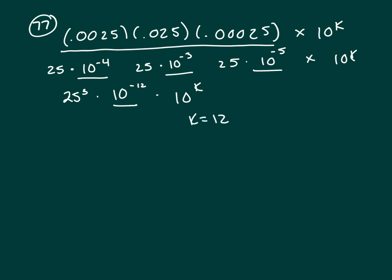Because 10 to the negative 12 times 10 to the positive 12 is 10 to the 0, which is 1. Because you add your exponents. So that would make 25 cubed a whole number.